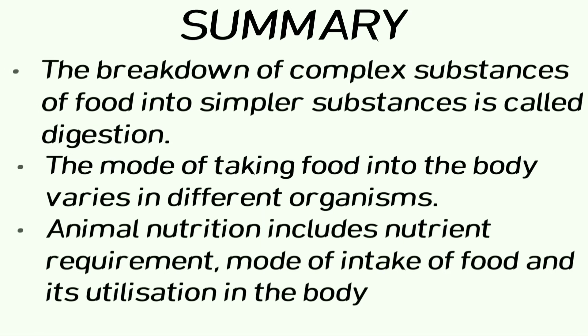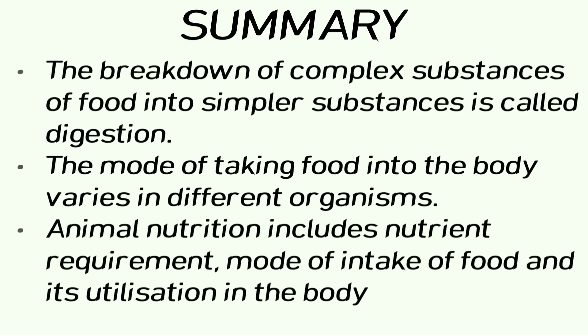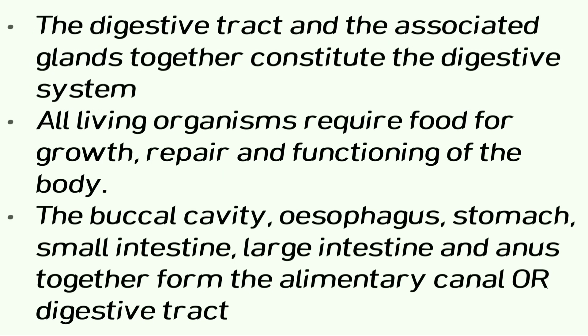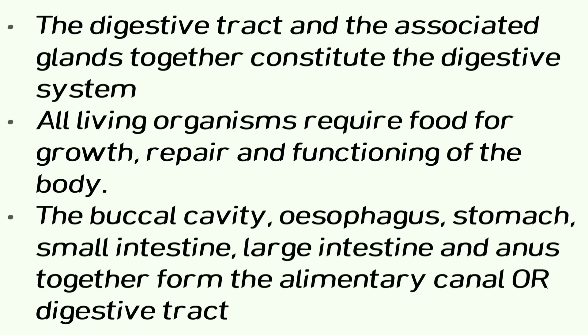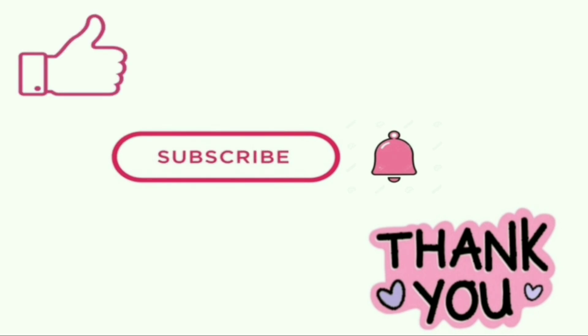To summarize: the breakdown of complex food substances into simpler substances is called digestion. The mode of taking food varies in different organisms. Animal nutrition includes nutrient requirement, mode of intake, and utilization in the body. The digestive tract and associated glands constitute the digestive system. All living organisms require food for growth, repair, and functioning of the body.